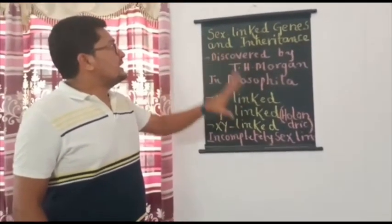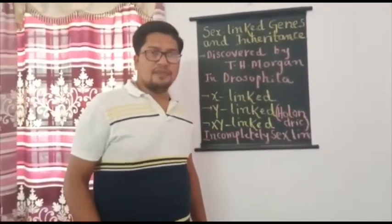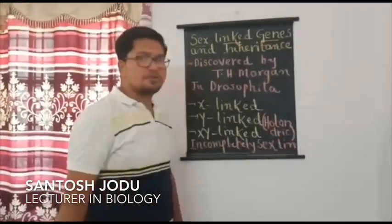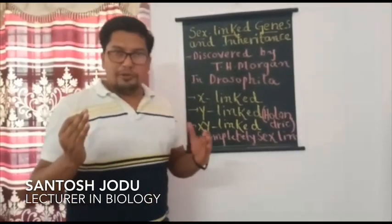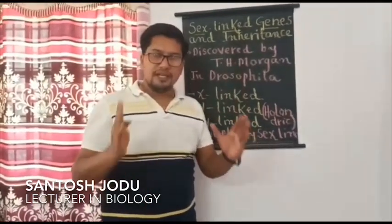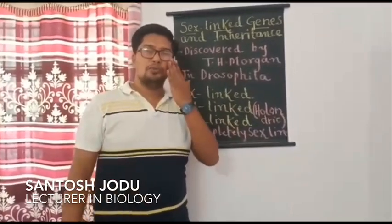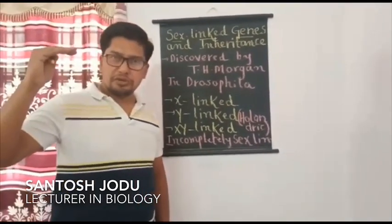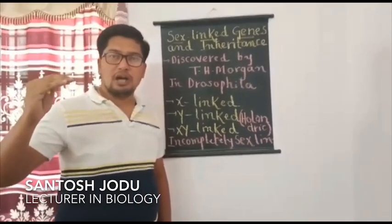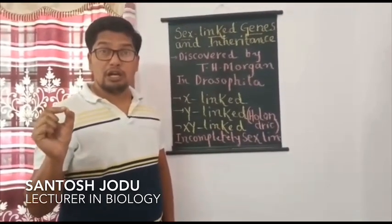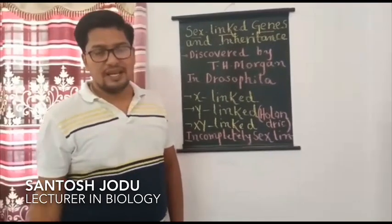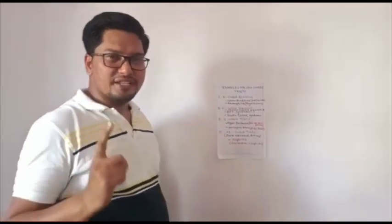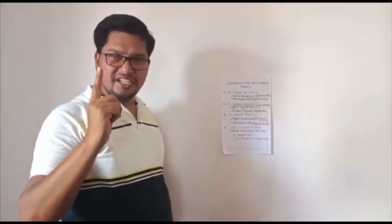Remember, T.H. Morgan is popularly known as the father of experimental genetics. Now let us understand what exactly sex-linked genes are. To understand this, students should know that the human genome comprises 23 pairs of chromosomes. Out of these 23 pairs, the first 22 pairs of chromosomes are called autosomes, otherwise called somatic chromosomes.